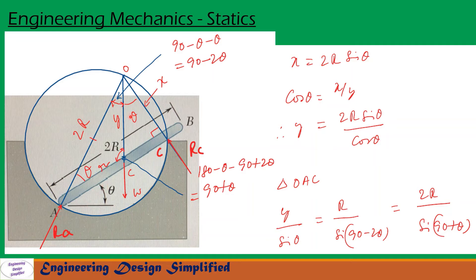Now from triangle AOC: the angle at A is theta, the angle at C is 90 degrees, so the angle from that line to the next will be 90 minus theta. Again we have a theta here, so the next angle becomes 90 minus 2θ. Therefore the remaining angle works out to 180 minus θ minus (90 minus 2θ), which equals 90 + θ. So the three angles in triangle AOC are θ, (90 − 2θ), and (90 + θ).